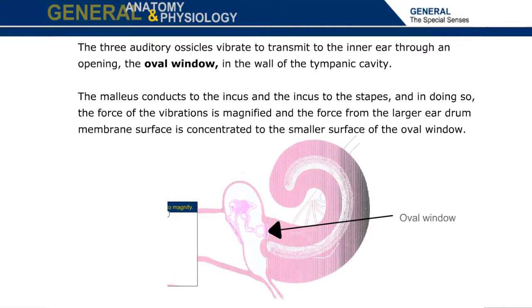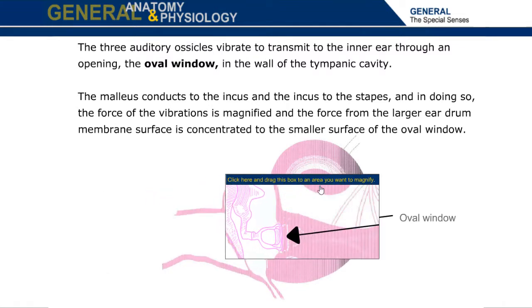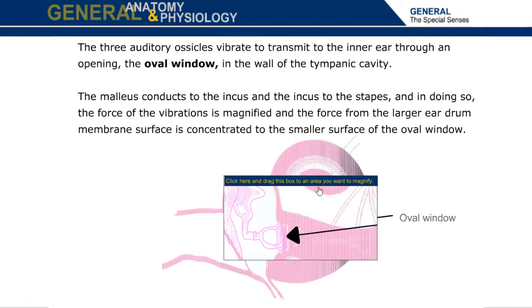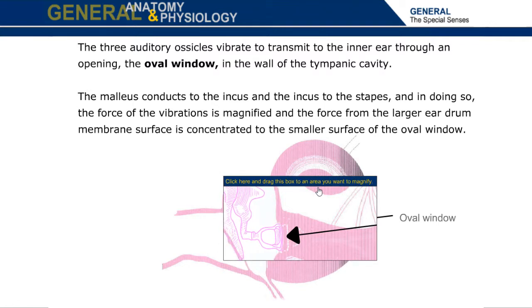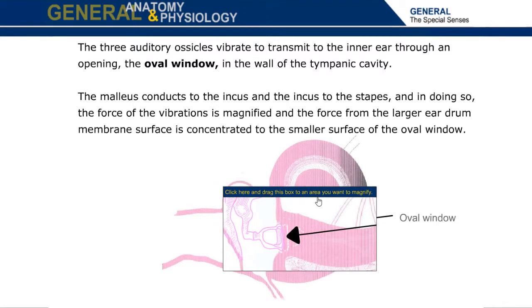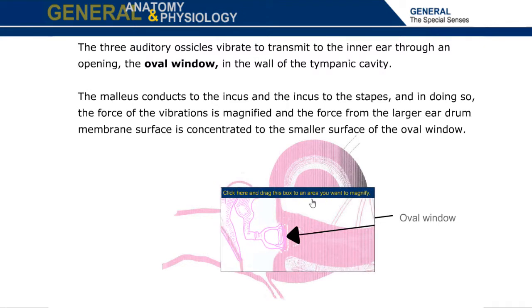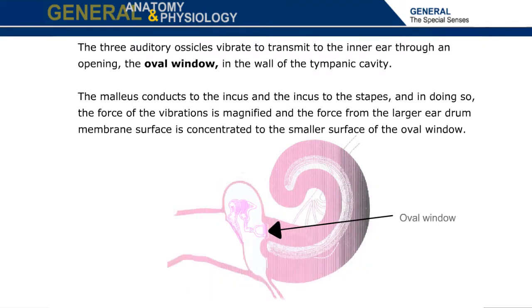The malleus conducts to the incus and the incus to the stapes, and in doing so, the force of the vibrations is magnified and the force from the larger eardrum membrane surface is concentrated to the smaller surface of the oval window.